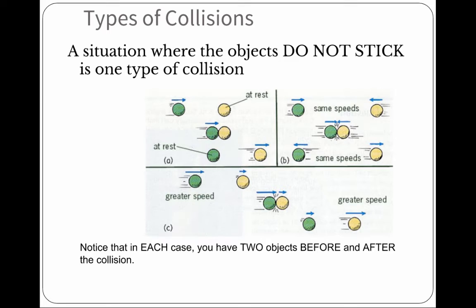So, there are several types of collisions. We looked at them qualitatively last time. We're going to look at them quantitatively this time. A situation where the objects do not stick together is one type of collision. Notice that in each case, you have two objects before and two objects after. And there are several ways that this can occur.